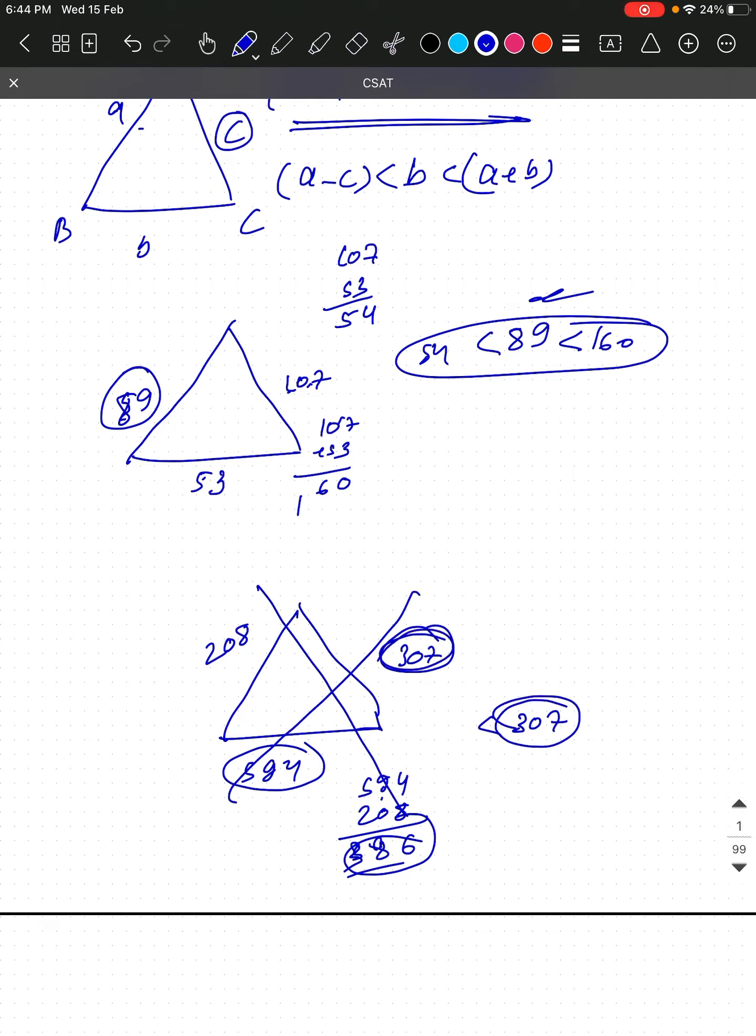Since the third side must be greater than the difference of the other two sides, and here the difference is bigger than the third side, this cannot form a triangle. The third side should be bigger than both differences - it doesn't satisfy the condition, so this is not a triangle.